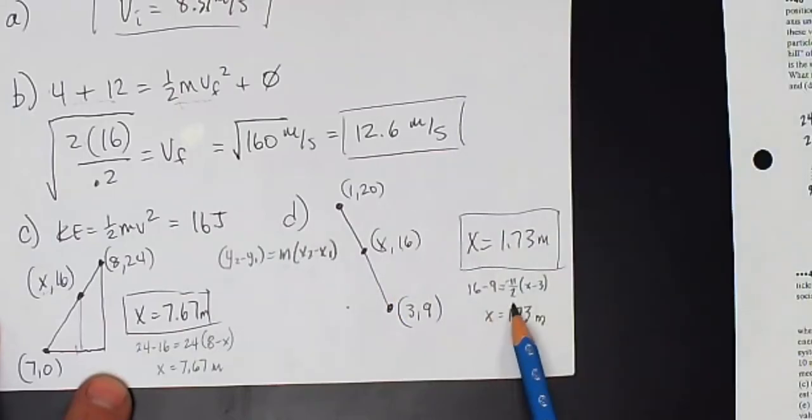So plug in my values to the point-slope formula and come up with my answer, x is equal to 1.73 meters.